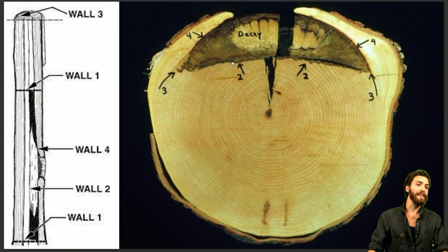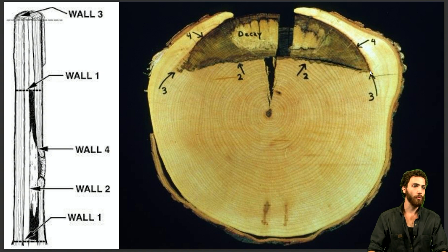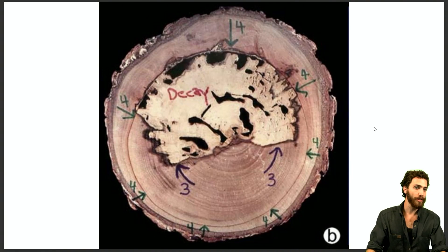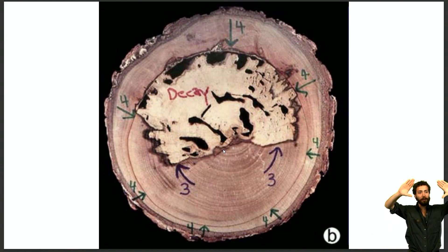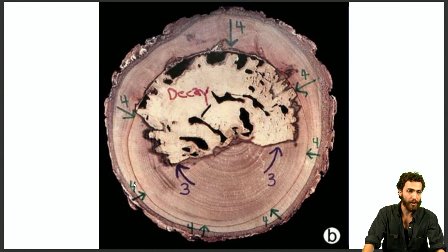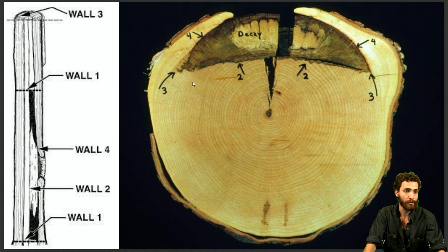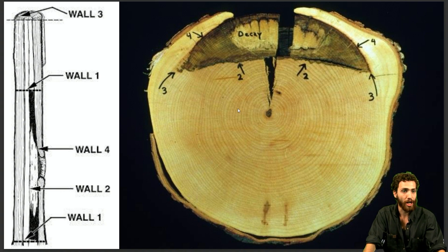Wall two is the boundary on the inside of decay preventing it from moving towards the pith. Wall three is essentially the path of a ray — it is the radial plane. You could think of it as a shield. If wall two fails but wall three is strong, you'll end up with what looks like a pizza slice — a wedge-shaped decayed pocket. So if the fungus moves past wall two into the pith but wall three prevails, you get a wedge-shaped decay.